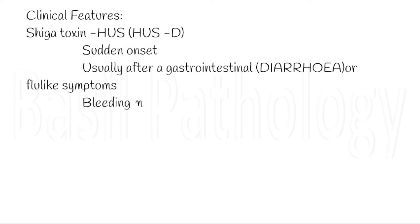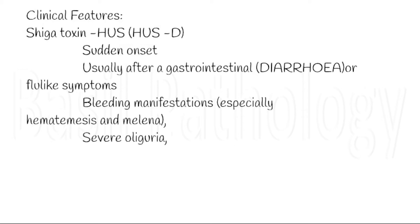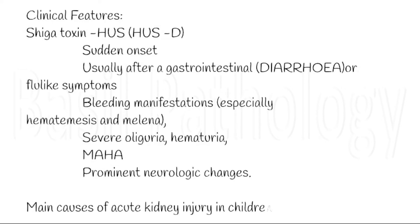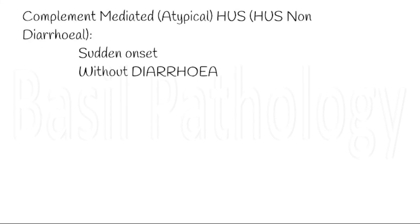Coming to the clinical features: typical Shiga toxin-mediated HUS is called HUS D-plus or diarrhea-associated HUS. It is sudden in onset, usually after a prodromal GI symptom, diarrhea, or flu-like symptoms. We can also get bleeding manifestations like hematemesis and melena, as well as severe oliguria, hematuria, and prominent neurological changes. This type of HUS D-plus is the major cause of acute renal injury in children. The complement-mediated HUS or atypical HUS (D-minus) is also sudden in onset, usually occurring without diarrhea.